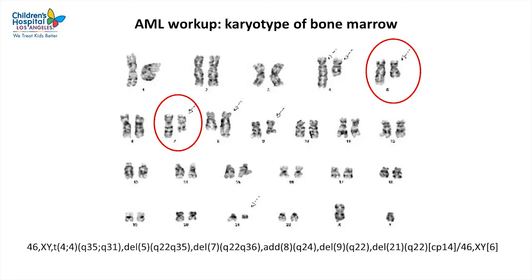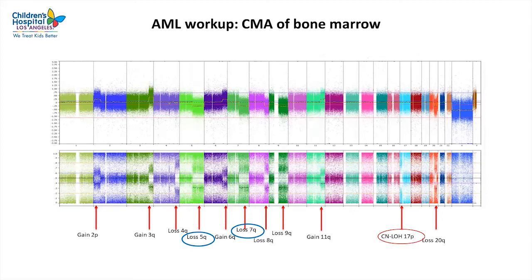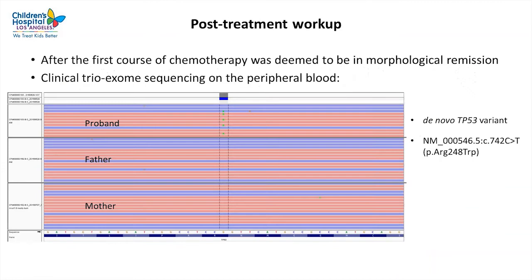Karyotype analysis of the bone marrow sample at AML diagnosis showed a complex karyotype with deletion of 5q and 7q, consistent with AML with myelodysplastic features. Chromosomal microarray analysis on the bone marrow sample demonstrated complex copy number alterations, including loss of 5q, loss of 7q, and copy-neutral loss of heterozygosity in 17p. There was concern for a TP53 mutation, with the loss of heterozygosity representing a secondary event leading to loss of the wild-type allele and complete loss of TP53 function.